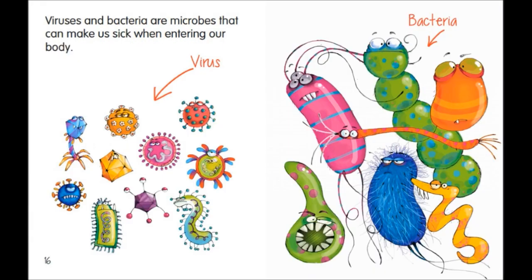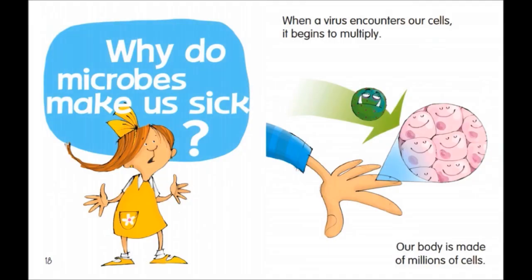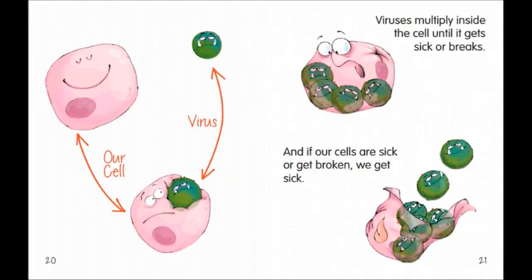Viruses and bacteria are microbes that can make us sick when entering our body. When a virus encounters our cells, it begins to multiply. Our body is made of millions of cells. Viruses multiply inside the cell until it gets sick or breaks, and if our cells are sick or get broken, we get sick.